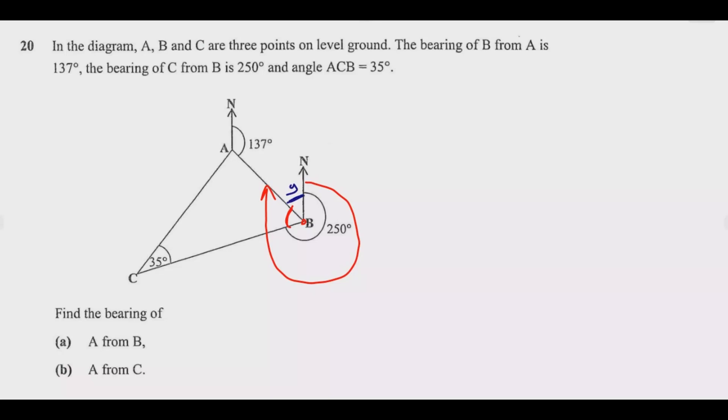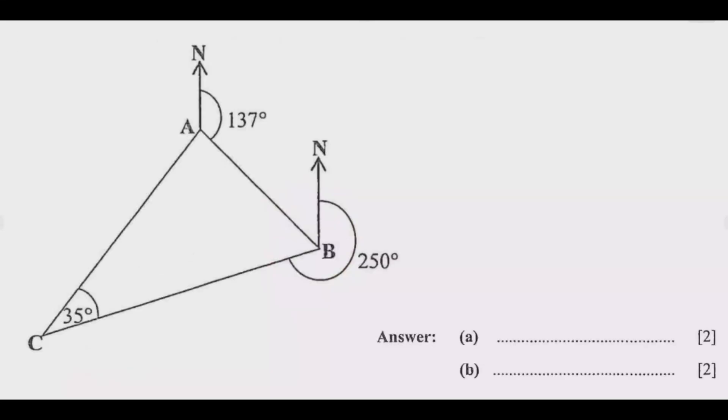If you can know that angle, then finding the bearing is easy because you're going to take that out from 360. We are looking for this angle from here to here. Our target is first to find this angle. We can find that angle by extending the north. This is the trick.